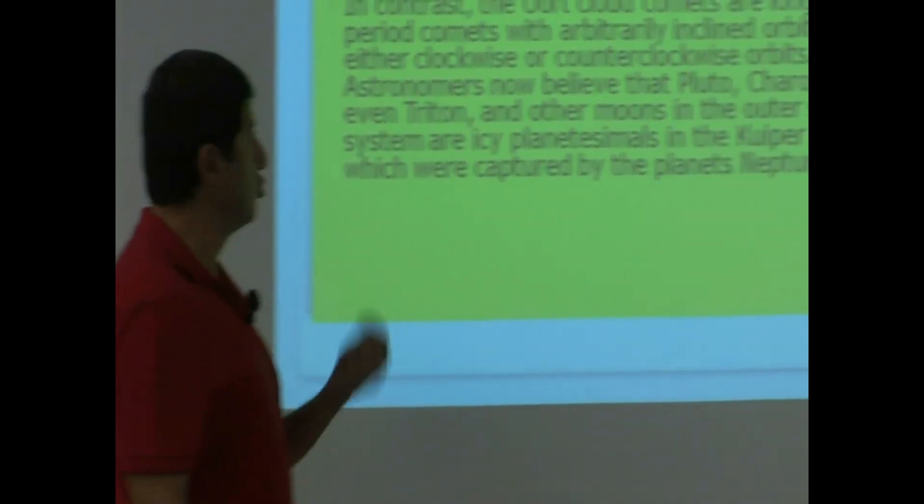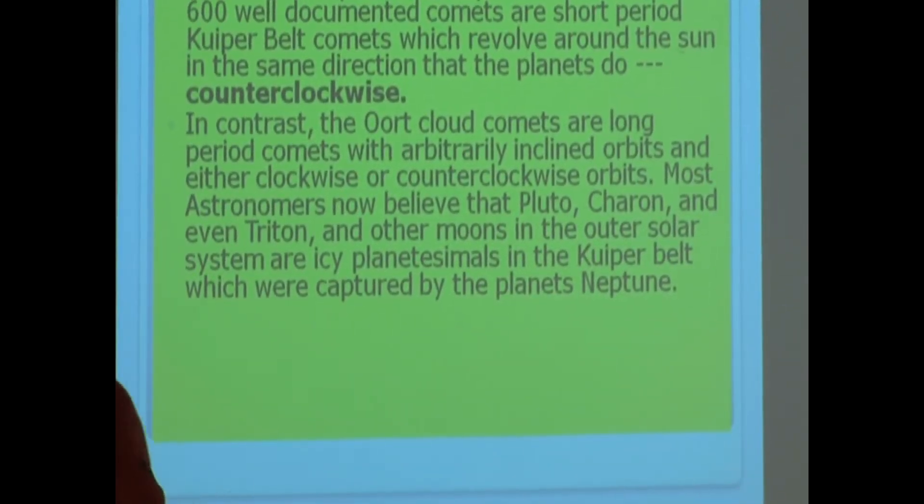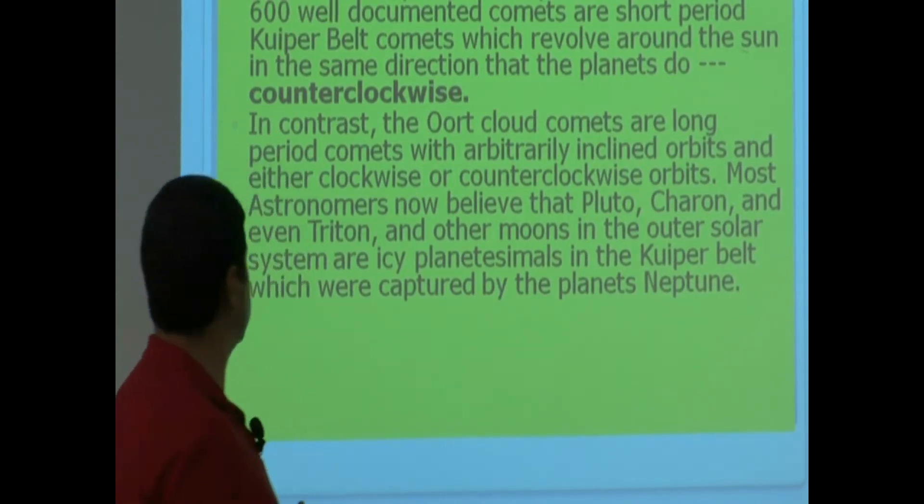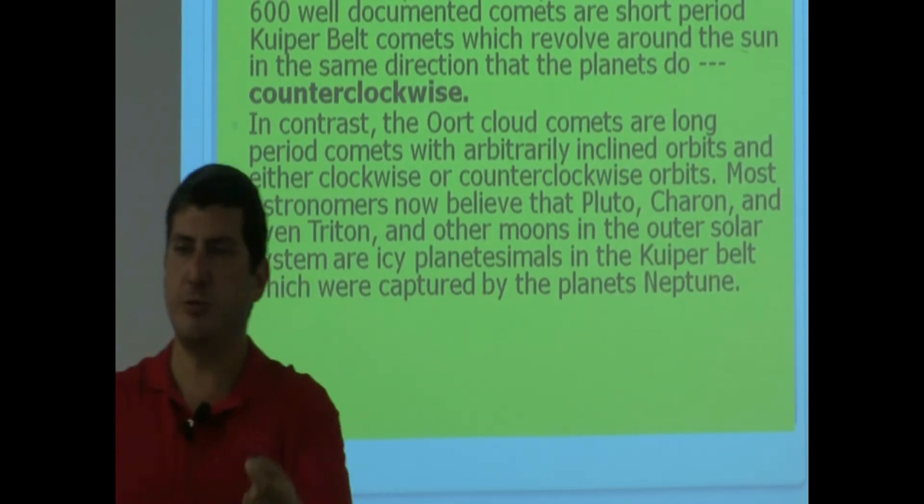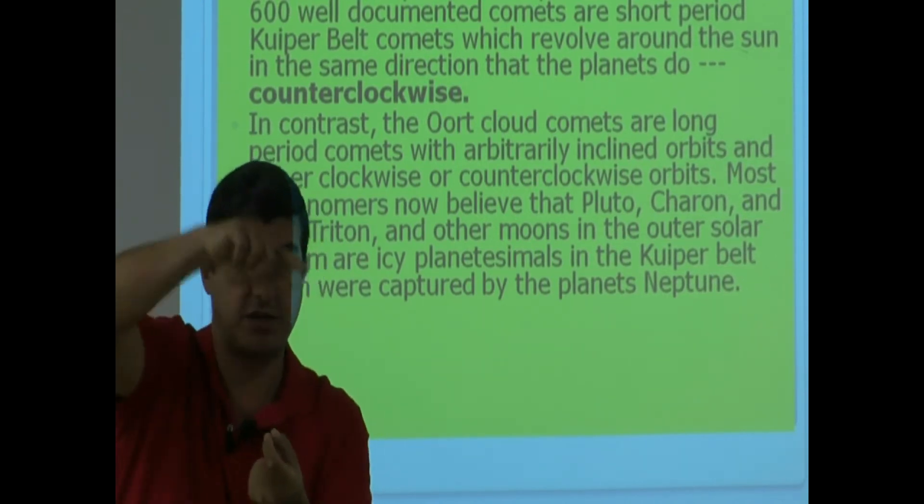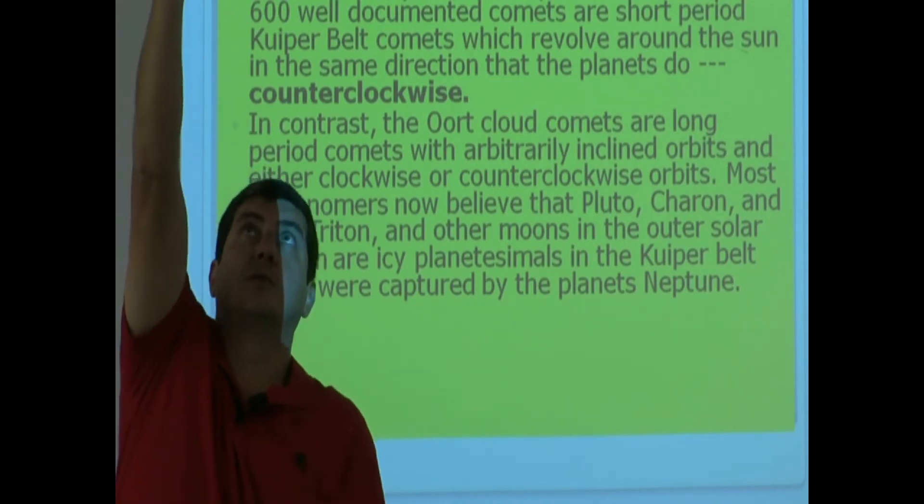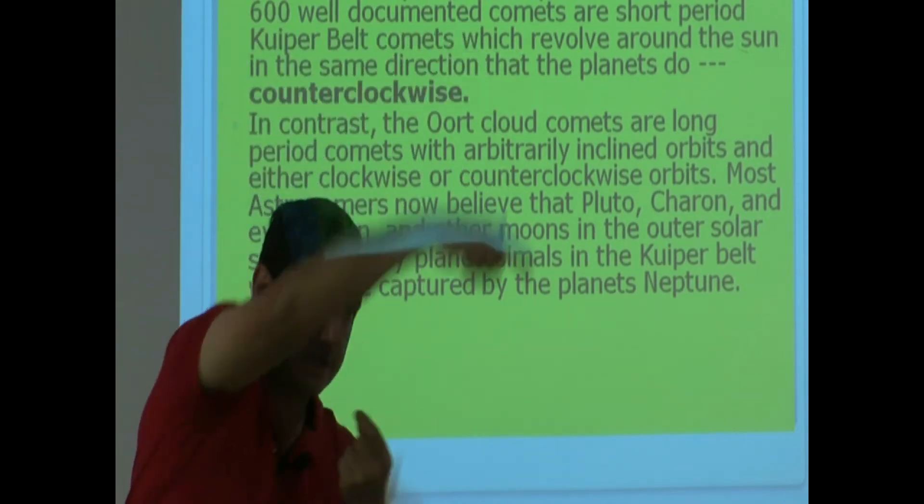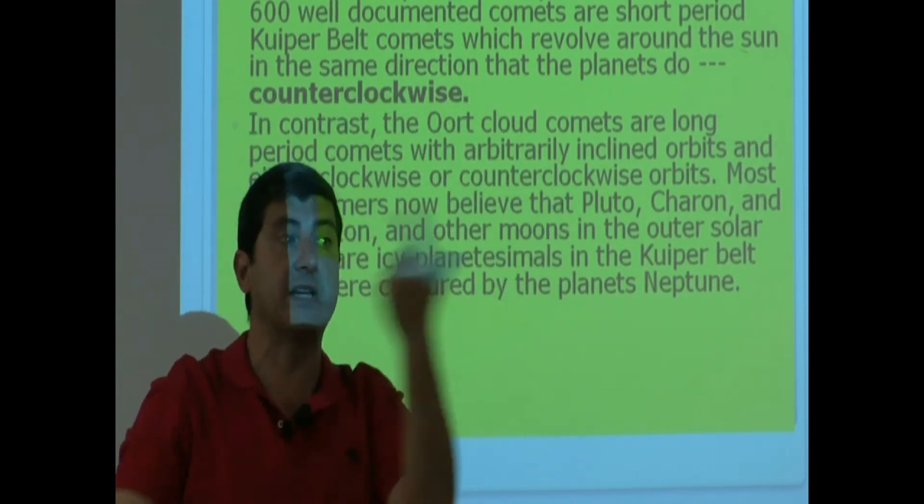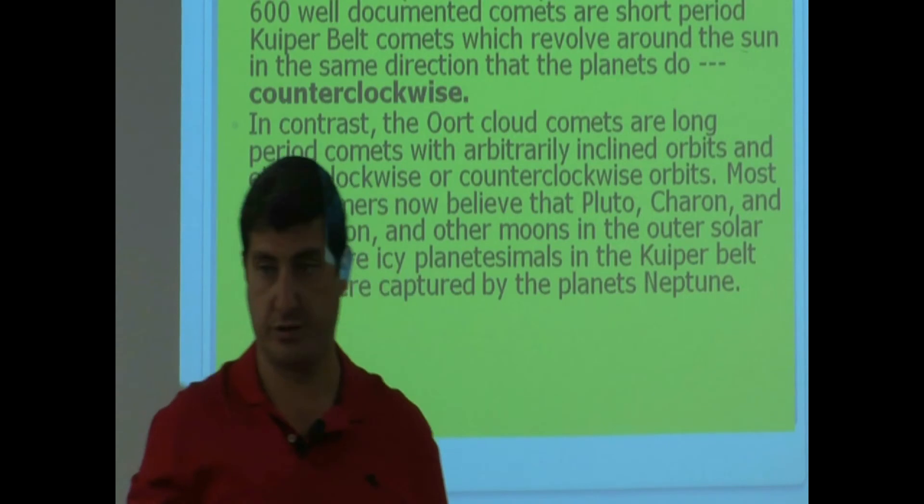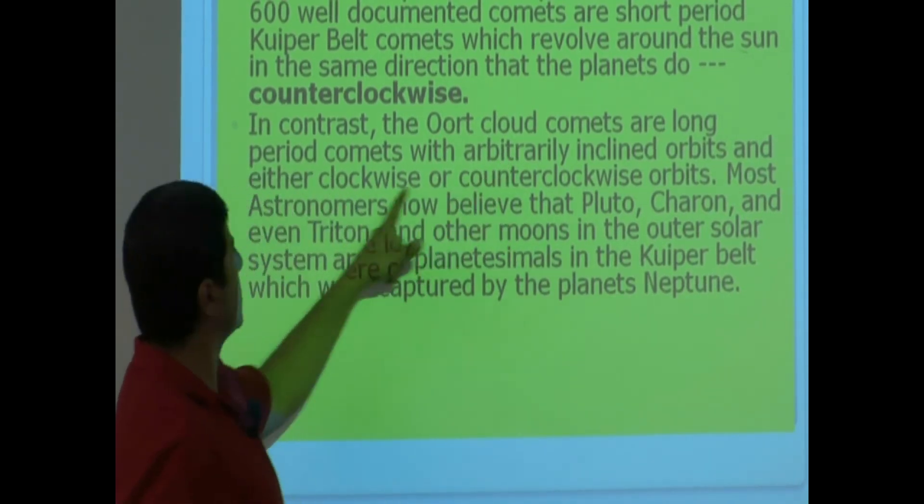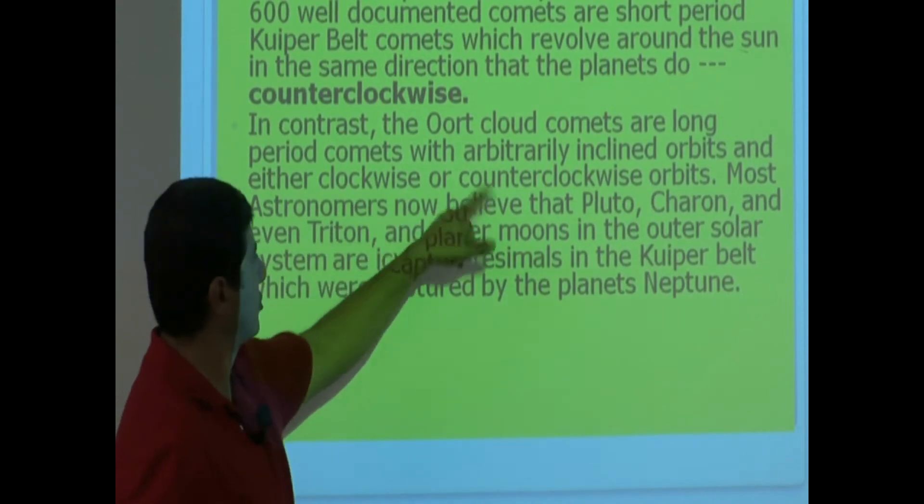In contrast, the Oort cloud comets are long-period comets with arbitrarily inclined orbits. That means they could be coming like this, instead of like that. They could be coming from up here, go back up. They could be coming like that. And their direction of orbit could either be clockwise or counterclockwise. No particular order. So it says here, arbitrarily inclined orbits and either clockwise or counterclockwise orbits.